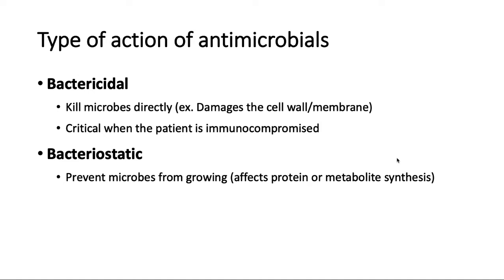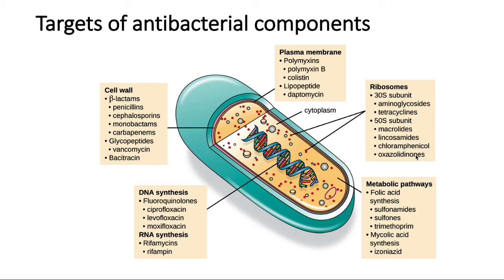Just reminding you that the antibacterial components are going to act on different parts and different structures of the bacterial cell, and many of these structures or processes will be very unique to the bacterial cell, which means that they are going to be good targets. For example, we have a large group of antibiotics acting on the cell wall, and that's going to include penicillin and other agents that interfere somehow in the structure or construction of the cell wall.